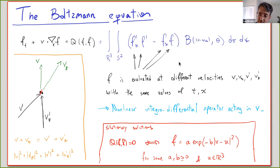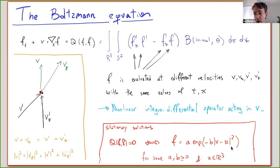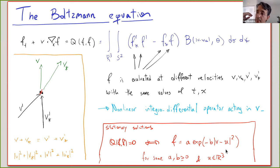For any kernel B, all Gaussian functions are stationary solutions — an important fact. In kinetic theory, Gaussian functions are called Maxwellians, and they are the stationary solutions of the Boltzmann equation. If you take a function that is constant in t and x and is a Gaussian in v centered anywhere with any parameters, that's always a stationary solution. These Maxwellian solutions are the equilibria of the kinetic equations.